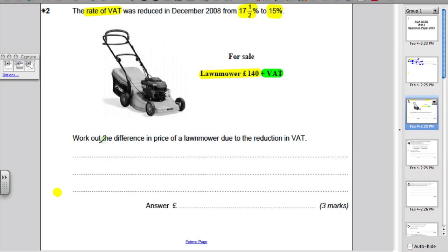The question says, work out the difference in price of the lawnmower due to the reduction in VAT. Now, there are two ways to do this. The first way is you could work out the old price given the 17.5% VAT rate. So, old, you would say, well, you need to work out 17.5% of 140.